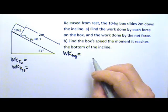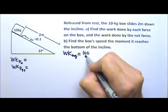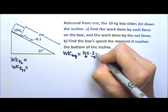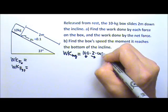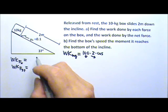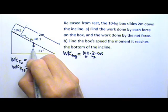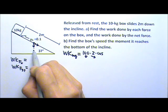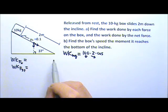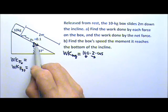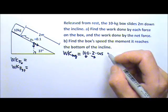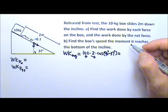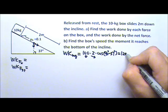The work done by Mg will be the weight Mg — 100 N — straight down, times the displacement of 2 meters along the incline, and we want the angle between these two. If I draw it here, Mg goes down and the displacement goes down that way. I can make a right triangle: if this angle is 37 degrees, then the angle between them is 90 minus 37, which gives us 53 degrees, and this gives us 120 joules.